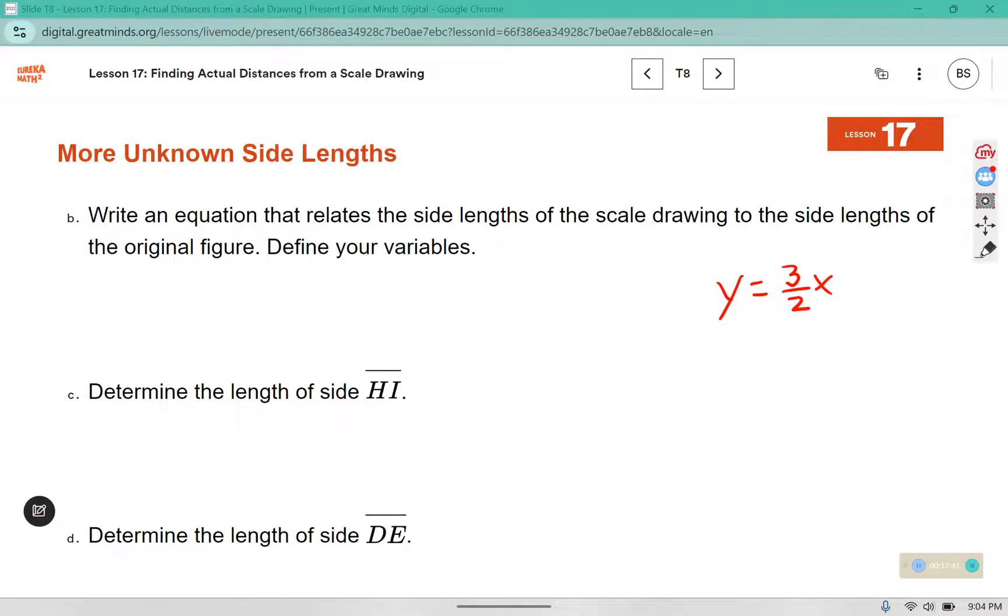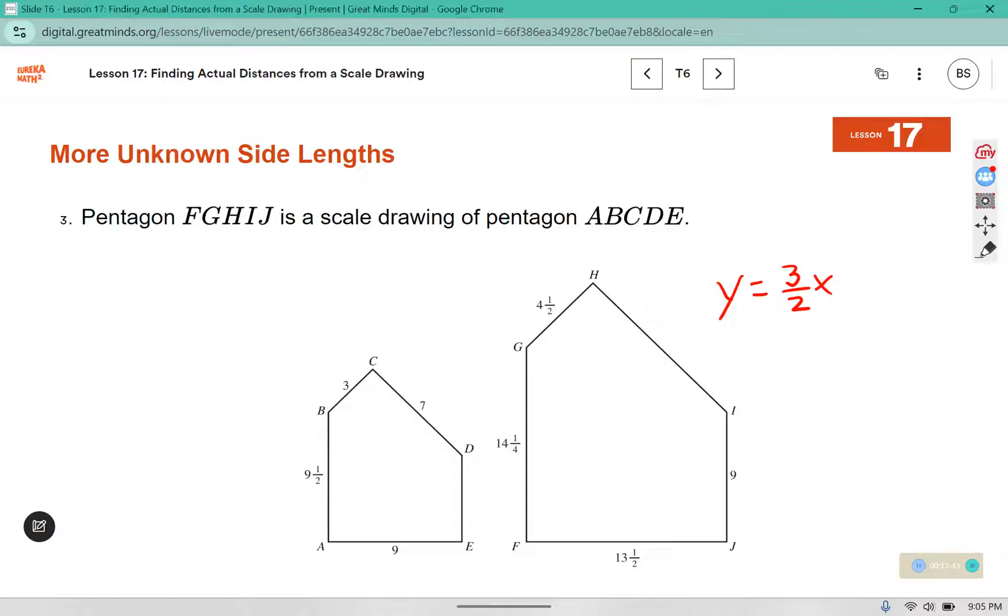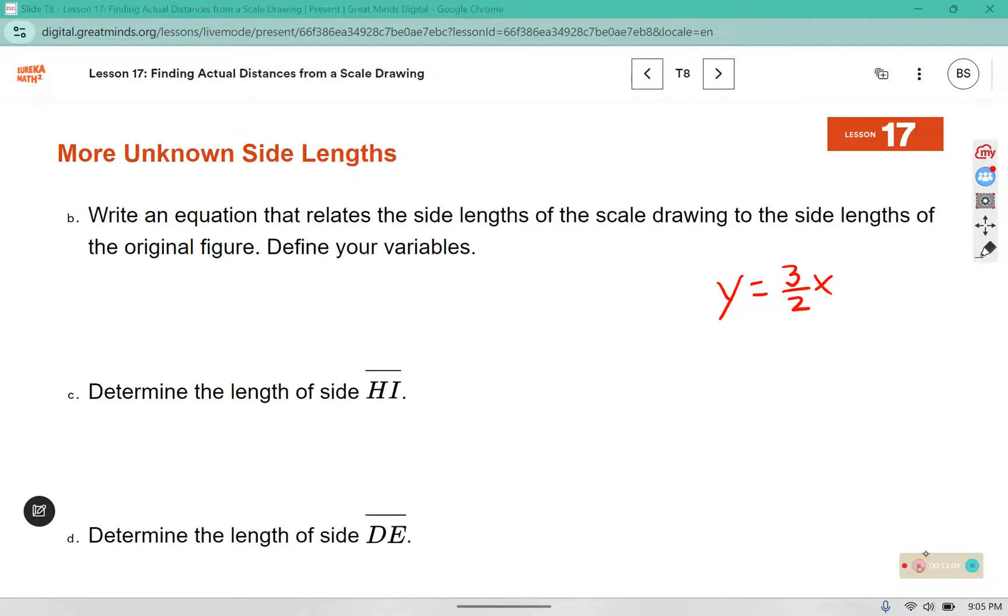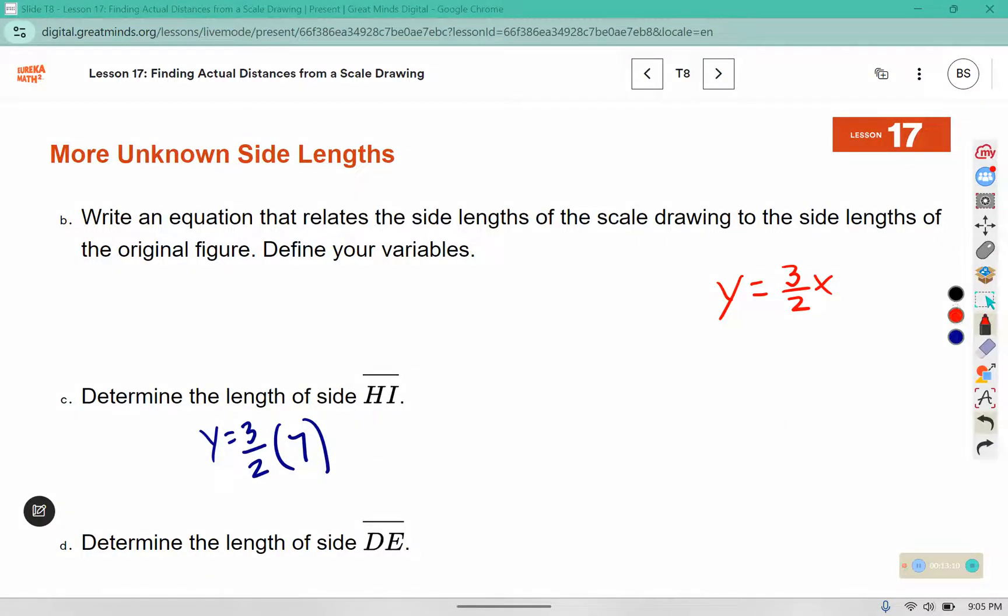Now we need to determine the length of side HI. In the picture, HI would be a new side length. That would be a y value. So I'm going to use the corresponding side. The original length 7 is going to replace the x value. Remember there's an invisible 1 under every whole number. 3 times 7 is 21, 2 times 1 is 2.